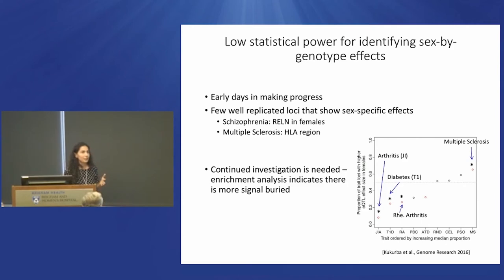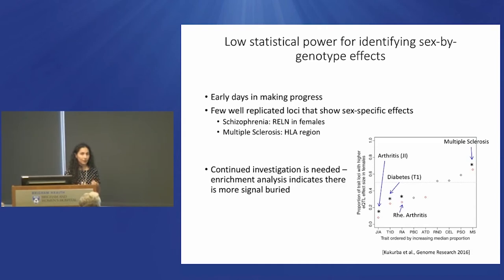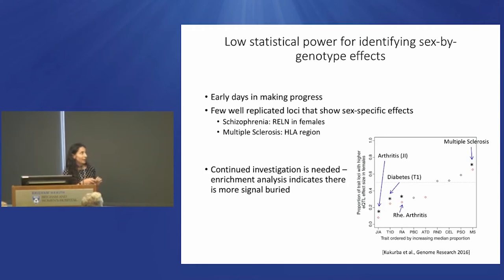To statistically prove a sex-specific effect, we need to pass the statistical bar of significance between effect sizes. A number of studies in the last five or six years looking at interaction tests have had mostly negative results — not finding statistically significant loci where effect sizes differ between males and females. There are a couple of well-cited exceptions, including a SNP in the reelin locus associated with schizophrenia in females but not males. But these analyses are underpowered, and we can't yet conclude that there are no sex-specific differences.